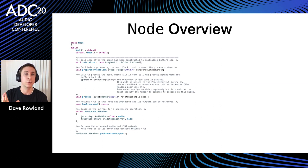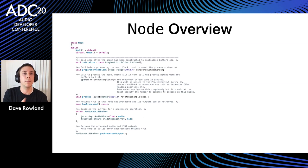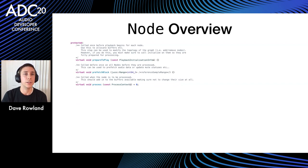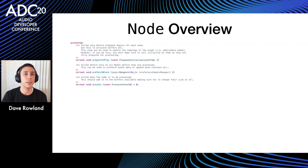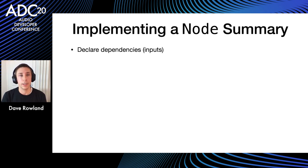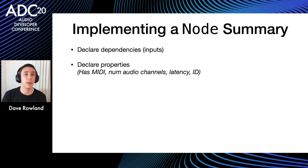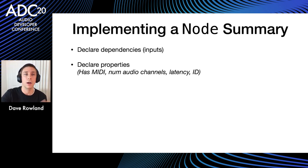The main class is the Node class. It has methods that players interact with for initializing and processing, virtual methods for implementation, and protected virtual methods for preparing and processing. To implement a node you need to declare dependencies, properties — MIDI presence, number of audio channels, latency introduced, and a unique identifier for copying latency buffers between graph rebuilds — and then implement initialization, prefetching, and processing.